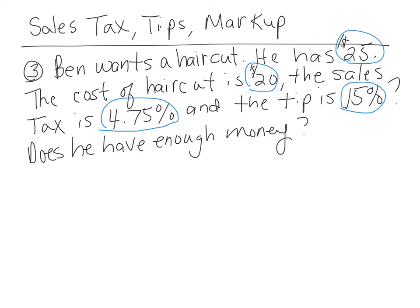They want to know: does he have enough money in his pocket to pay for the haircut, the tax, and the tip? He only has $25. Well, I can combine or add these two percentages — 15% plus 4.75%. They're both percents, and I get a total percent of 19.75%.